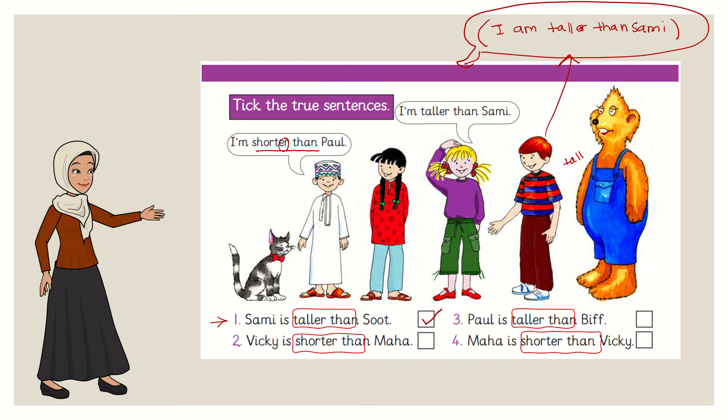Number two. Vicky is shorter than Maha. Vicky, who is here, is shorter than Maha. Is it correct? Who is short here? Maha. So is Vicky shorter than Maha? No. Maha is shorter than Vicky. Do you see the height? Number three. Paul, who is he, is taller than Biff. Is it correct? No. Biff is the very tallest person of them all.